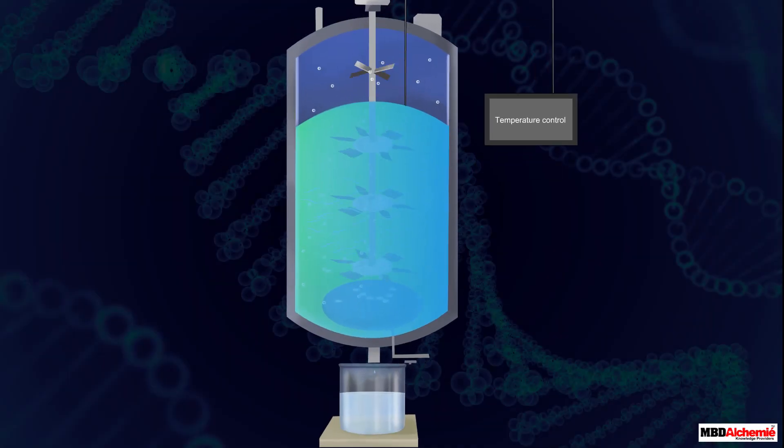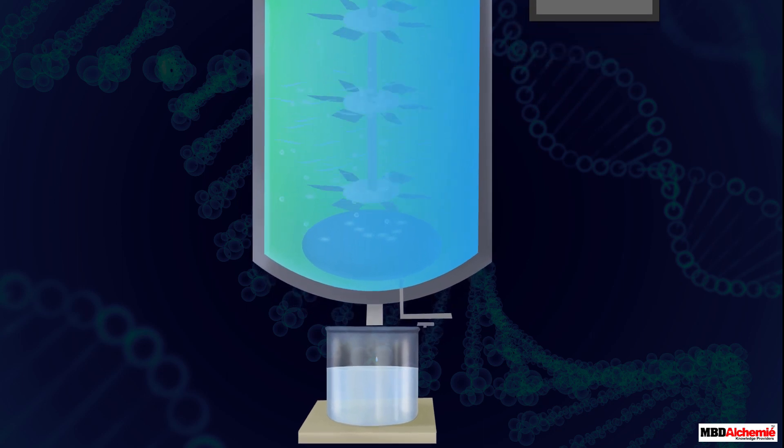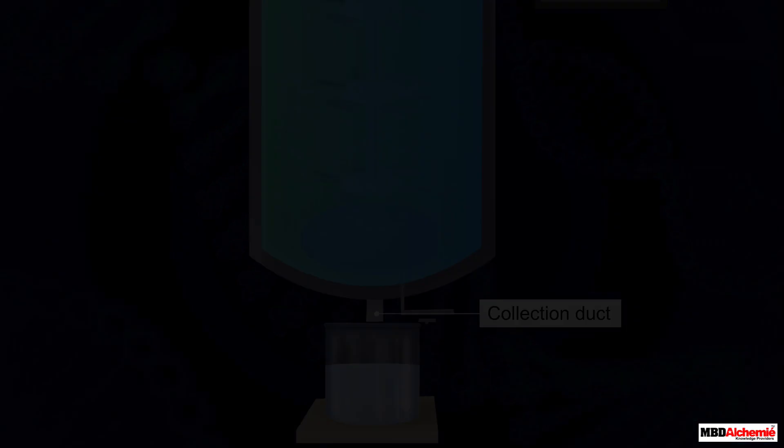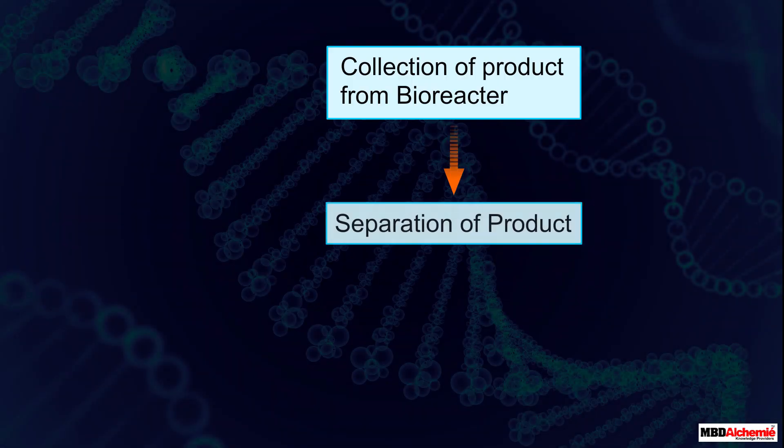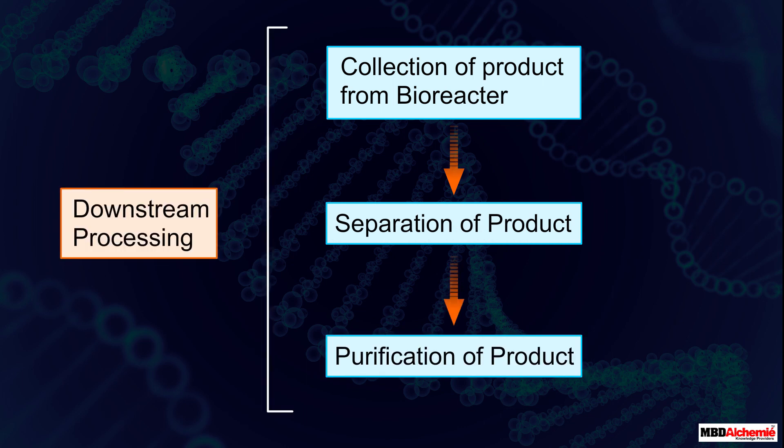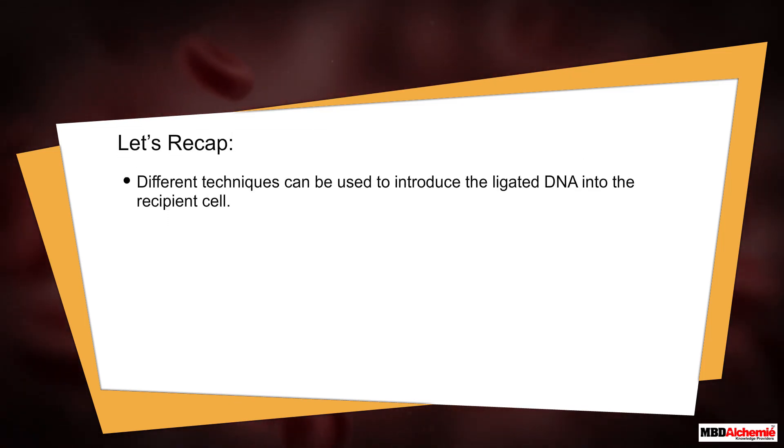Once the bioreactor has produced enough product, it is collected from the bioreactor for separation and purification. This collection of the product followed by its separation and purification is called the downstream processing.